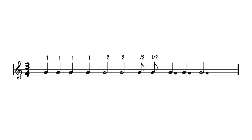Now we've got a dotted crotchet — remember from our last video that a dot adds on half the value of a note. A crotchet is worth 1 beat, and the dot adds another half beat, so in total a dotted crotchet is worth 1.5 beats. We have another dotted crotchet, so another 1.5 beats. Then to finish off we have a dotted minim, which is worth 3 beats.